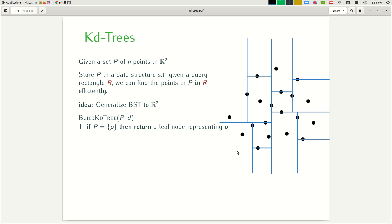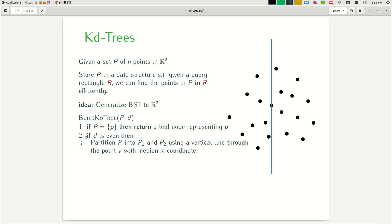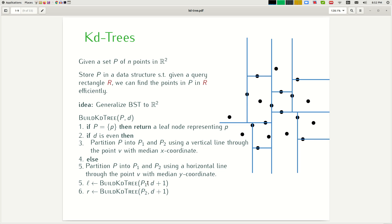So this brings us to build the data structure that we call a KD tree. The pseudocode will roughly look something like this. If you have only one point left then we return a leaf node representing that one point. Otherwise we do a different division based on whether we have an odd depth or even depth. So if the depth of the recursion is even then we partition the input points into two equal sets using a vertical line. If the depth of the recursion is odd then we use a horizontal line and then we recurse on the left set and the right set with one extra depth.